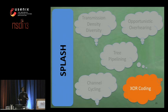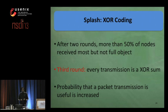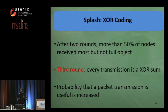Our next technique is to exploit XOR coding. After the first two rounds of dissemination, we observed in our experiments that more than 50% of the nodes received most of the data object, but not the full data object.